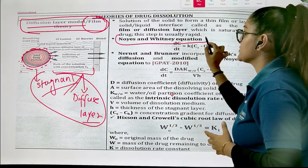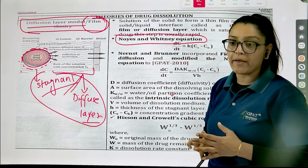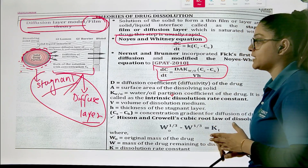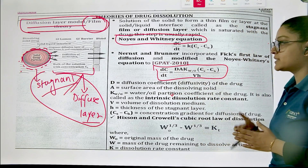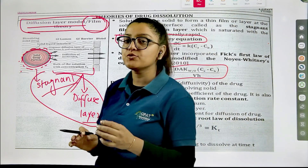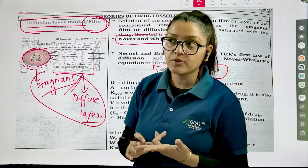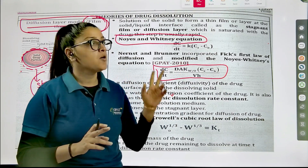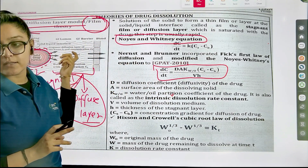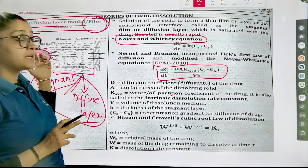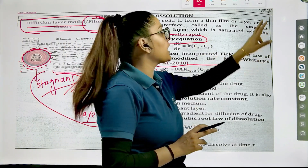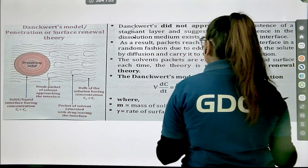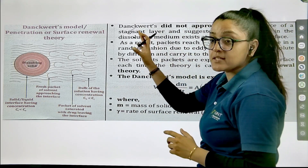The stagnant layer is known as the diffuse layer because the diffusion is happening solely due to the concentration gradient. This diffusion is governed by an equation — the Noyes-Whitney equation — and we actually use the modified version of it. This is the diffusion layer model. Key points to remember: the formation of a stagnant layer, development of a concentration gradient, and movement of drug from the stagnant layer to the bulk phase.